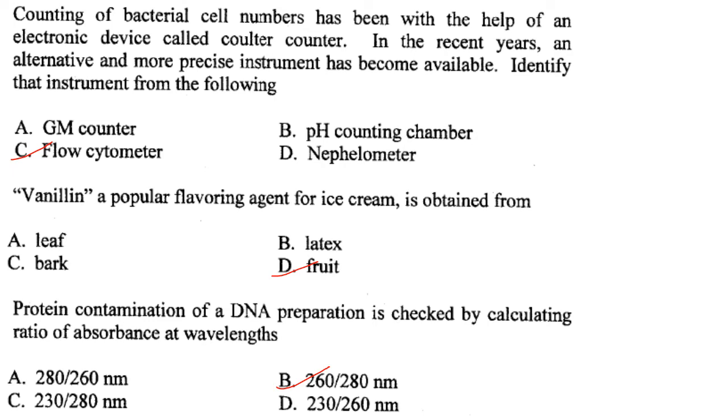Vanillin, a popular flavoring agent for ice cream, is obtained from the fruit. Answer is option D.